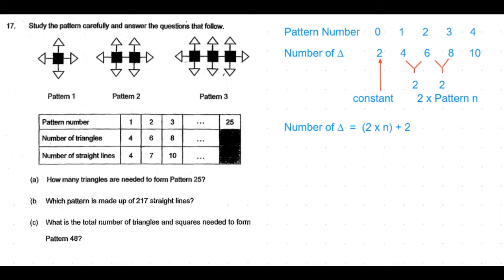The number of triangles formula becomes: 2 times the pattern number plus 2. For the first question — how many triangles are needed to form pattern 25 — once we apply the formula with n = 25: 2 times 25 is 50, plus 2 is 52. So there will be 52 triangles in pattern 25.